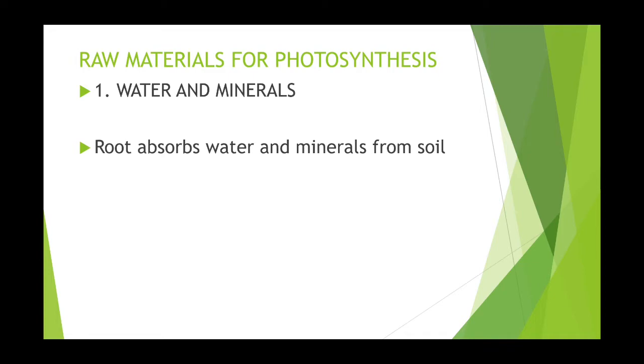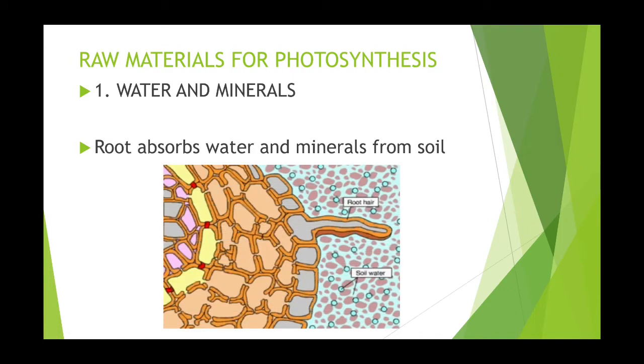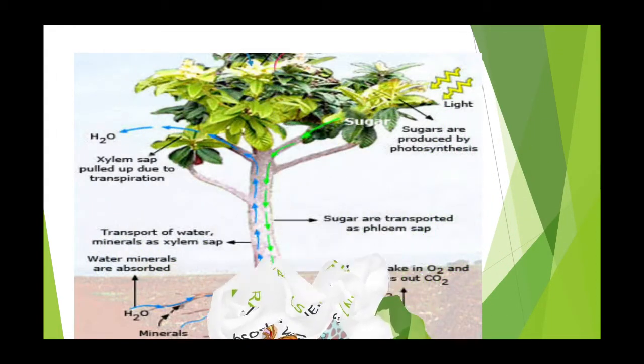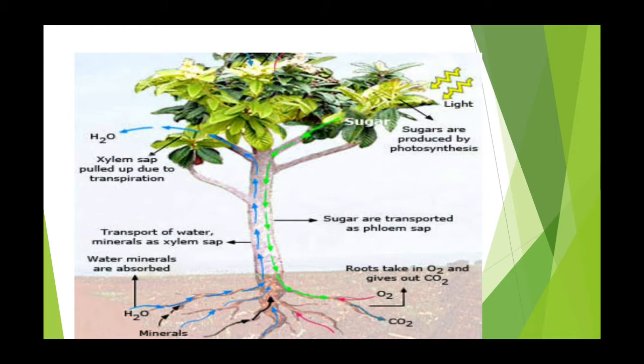From here, water and minerals are transported to other parts of the plant by the vessels. The vessels are tubes that run throughout the root, the stem, the branches, and leaves.